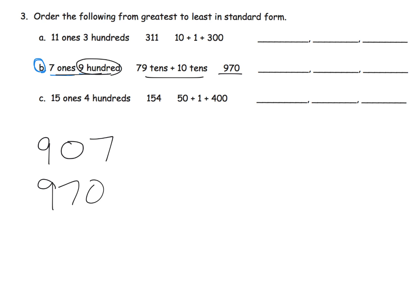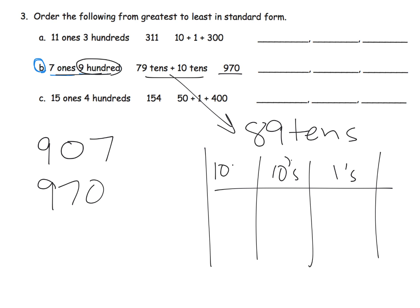Now let's take a look at seventy-nine tens plus ten more tens. Well the important thing is seventy-nine tens plus ten more tens, that's eighty-nine tens. So if we want to model that using place value disks, here's our ones, here's our tens, here's our hundreds, eighty-nine tens. Well eighty tens gives us eight hundreds, and nine tens is left over, nine tens.